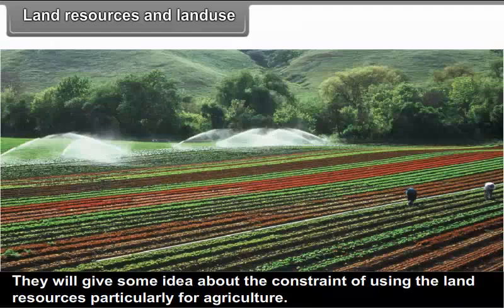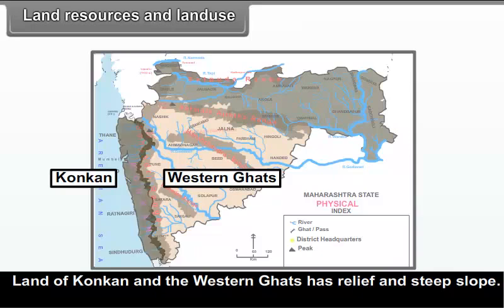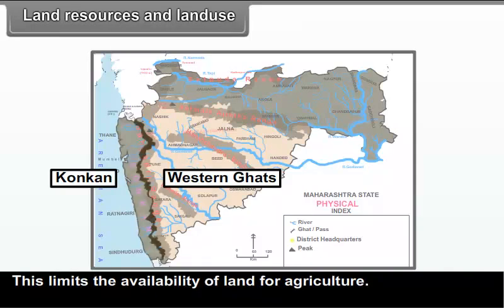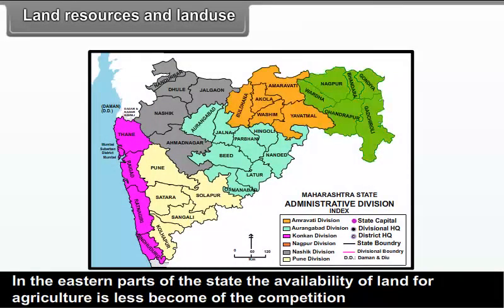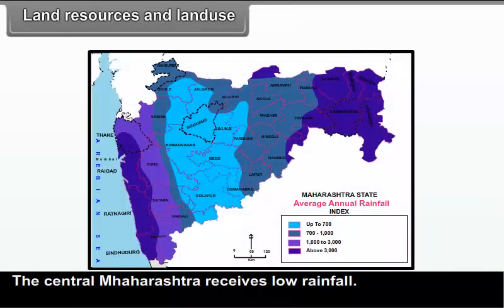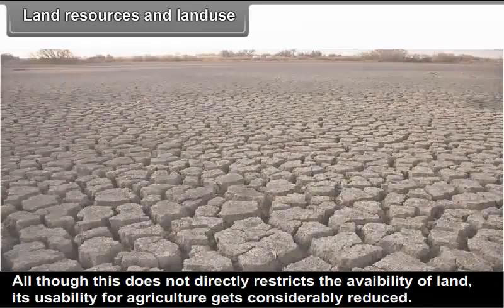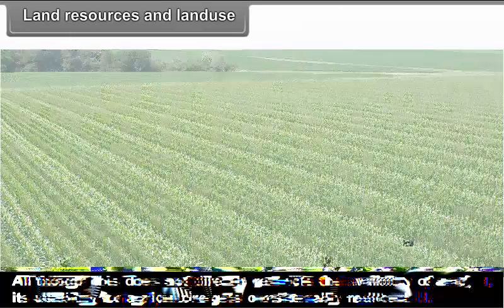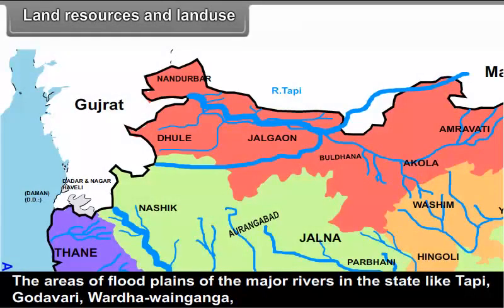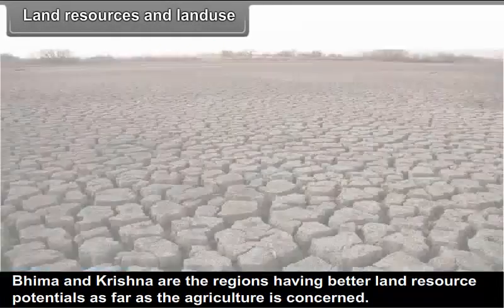These maps will give some idea about the constraints of using the land resource, particularly for agriculture. Land of Konkan and the Western Ghats has high relief and steep slope, which limits the availability of land for agriculture. In the eastern parts of the state, the availability of land for agriculture is less because of the competition with other uses such as forest and mining activity. Central Maharashtra receives low rainfall, and although this does not directly restrict the availability of land, its usability for agriculture gets considerably reduced. The areas of floodplains of major rivers like Tapi, Godavari, Wardha, Ganga, Bhima and Krishna are the regions having better land resource potential for agriculture.